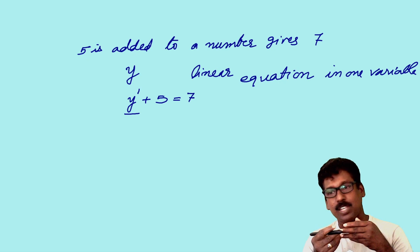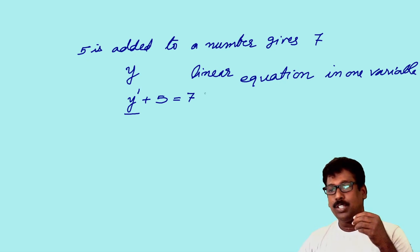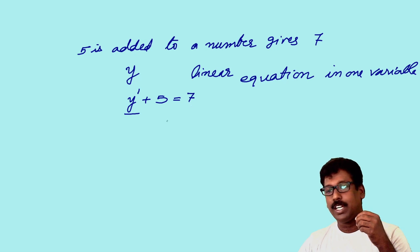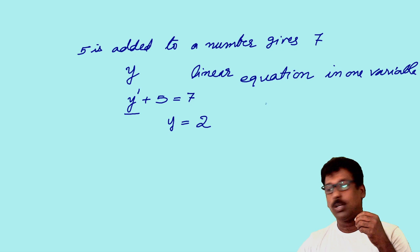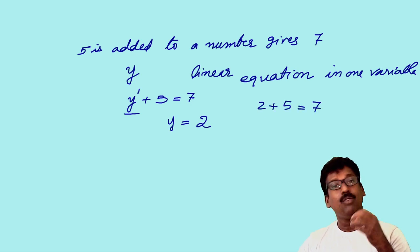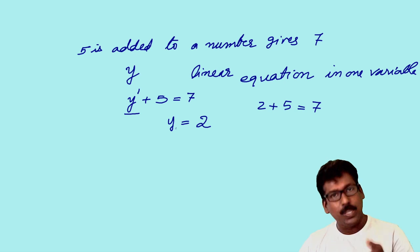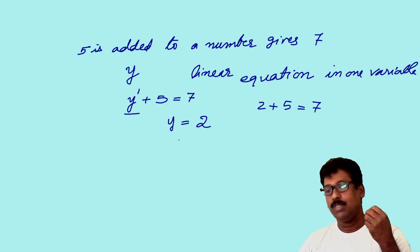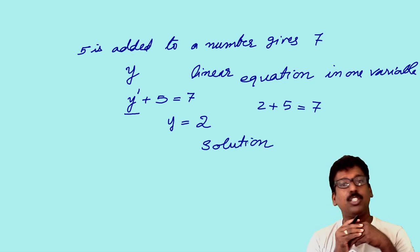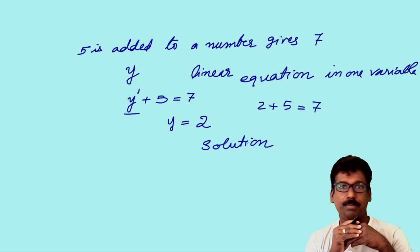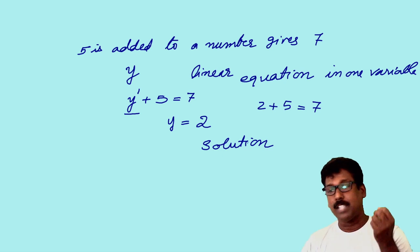What is the value of y here? If you add 5 to y you get 7, so y is obviously equal to 2, because 2 plus 5 is equal to 7. The value of y which satisfies this equation we can call the solution of the equation. Here y equals 2 is the solution of the equation.